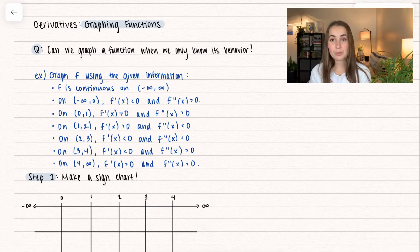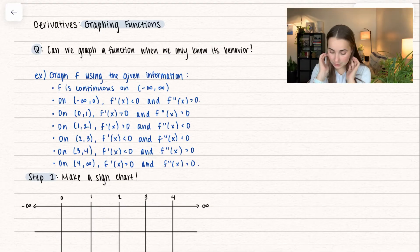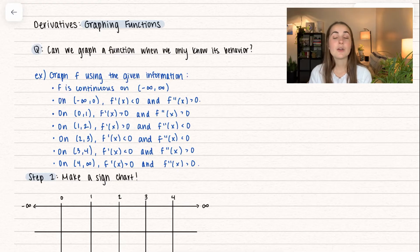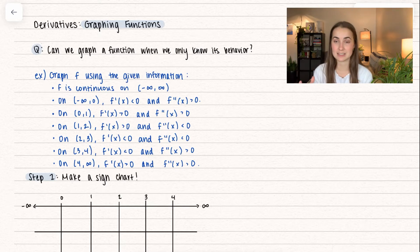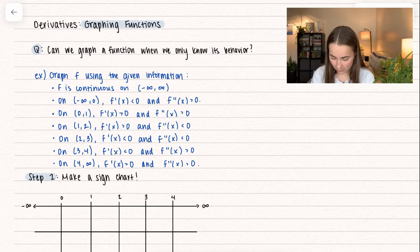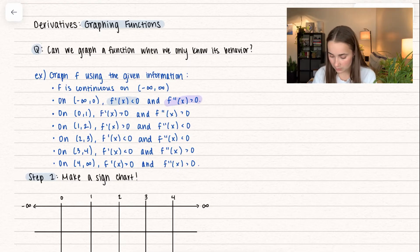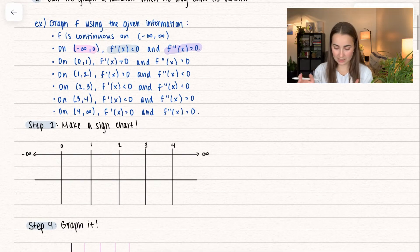We're going to go through an example here together — we're going to graph f using the given information. First, we have that f is continuous on the open interval negative infinity to infinity, so there's not going to be anything funky happening in between; it's just going to be a continuous, nice function. Let's look at all the pieces of information we're given on the first and second derivative and the interval. We have a sign chart, and that's always our first step.